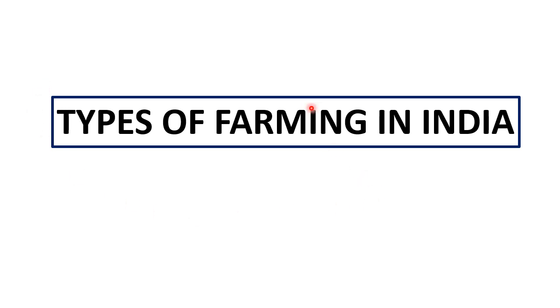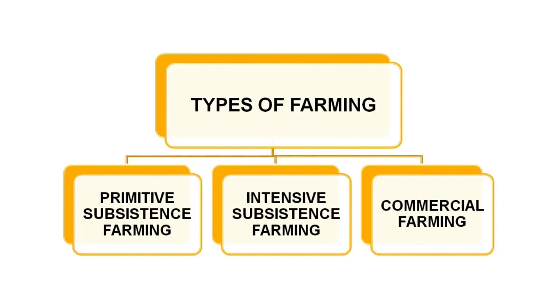Now we will see the types of farming practiced in India. Mainly the types of farming practiced in India are subsistence type — which has two sub-types: primitive subsistence farming and intensive subsistence farming — and commercial farming.